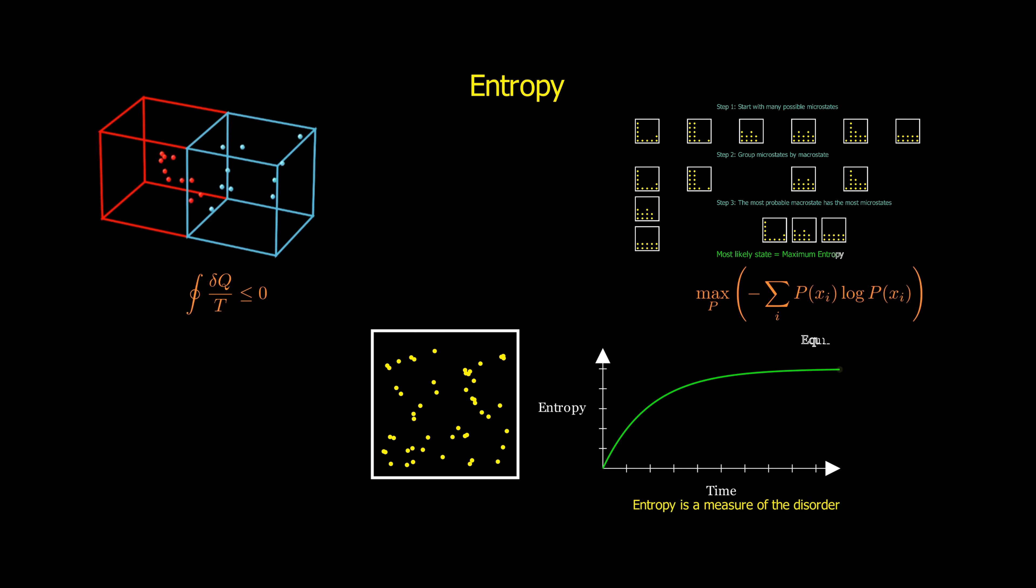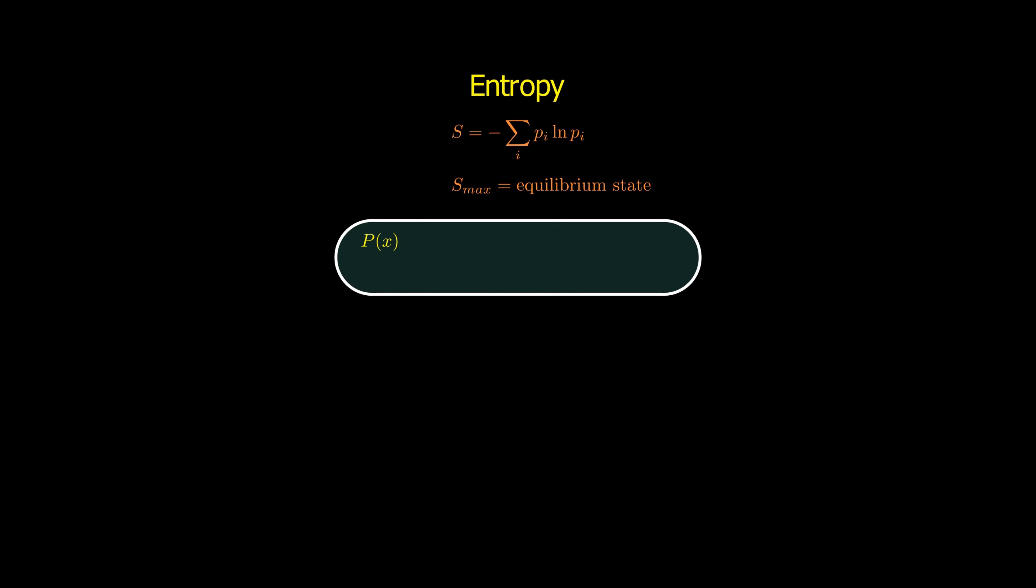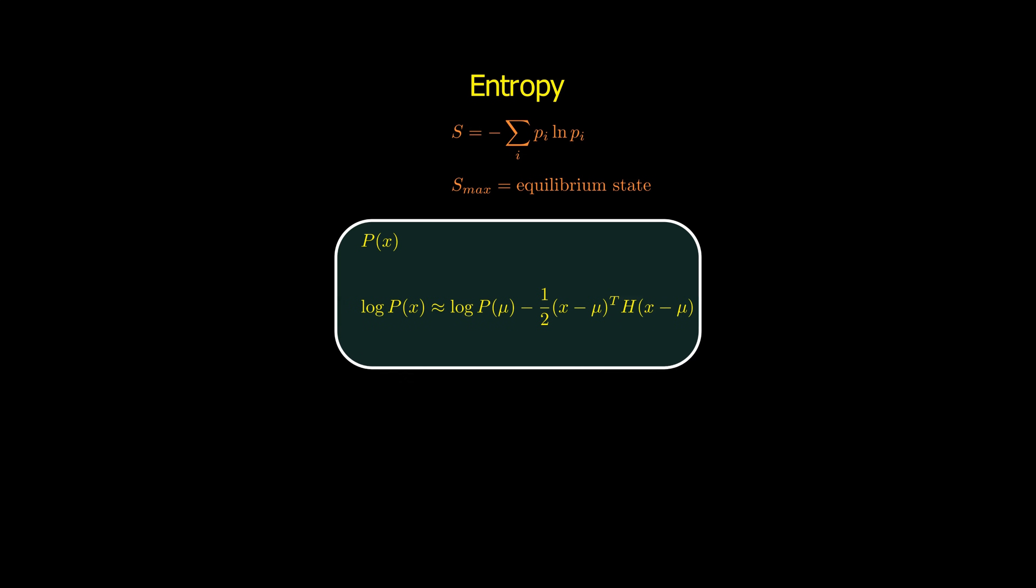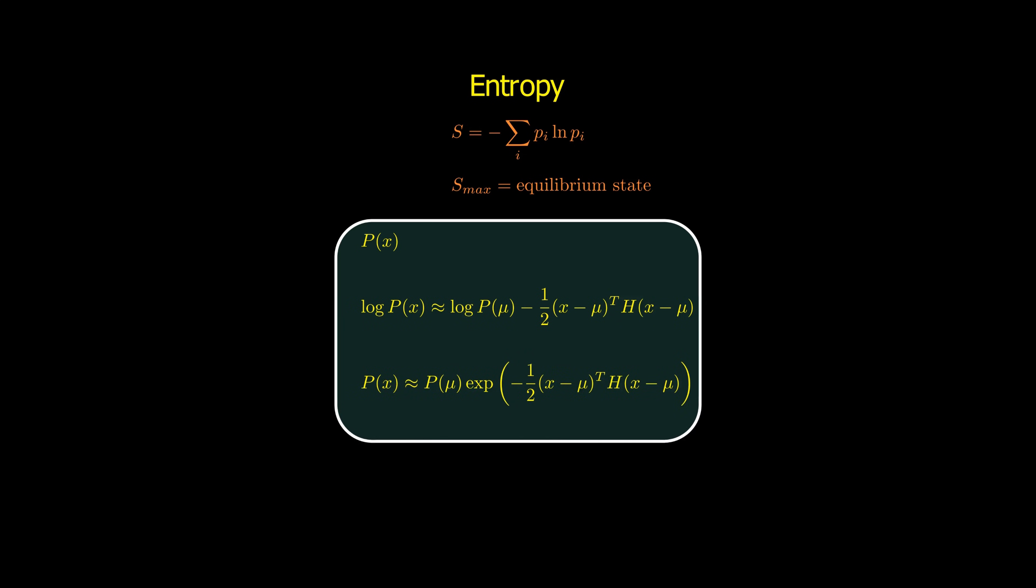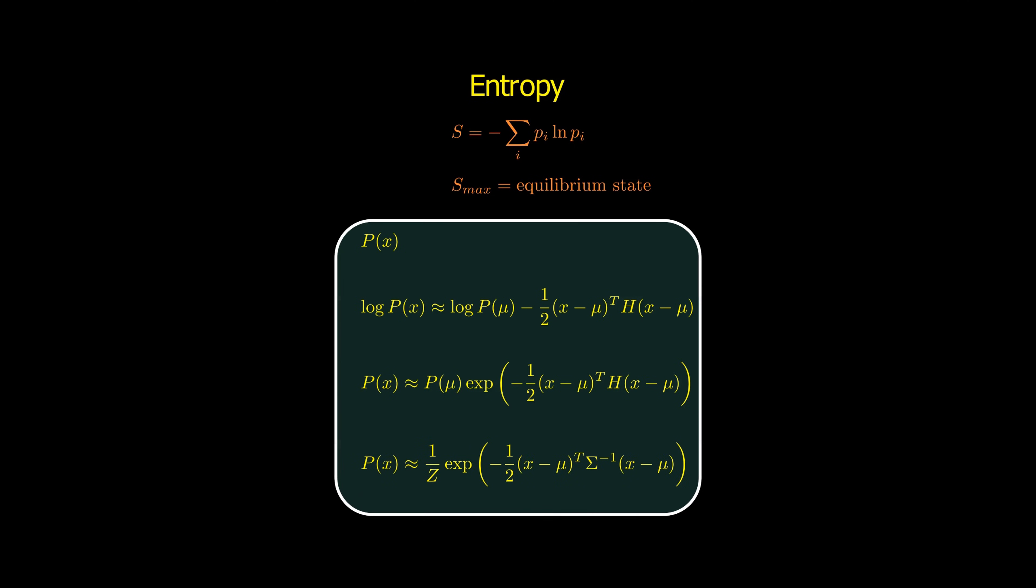This is the equilibrium state. That means, these laws guarantee the evolution of a system toward such state. Entropy itself is defined the same way in both contexts. So, whether we're dealing with atoms in a container or a general problem in machine learning, unperturbed systems tend toward stability, an equilibrium state of maximum entropy. And that's why we can take a general form of a probability distribution, expanded around this equilibrium, and arrive at the multivariate Gaussian as the most natural first approximation.